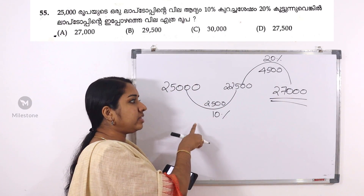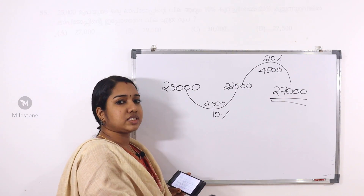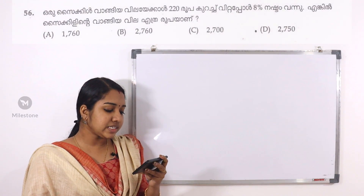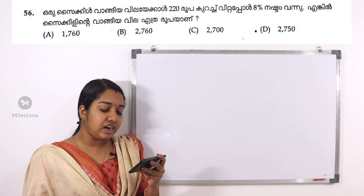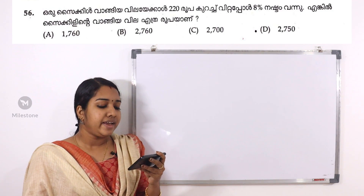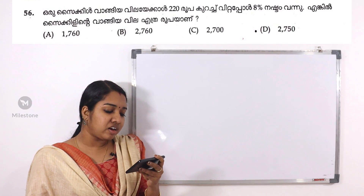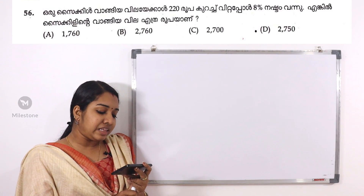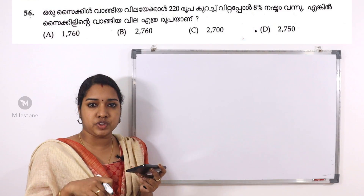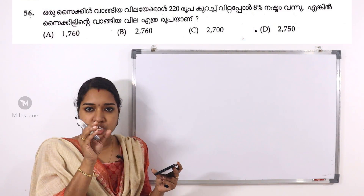Here we will discuss part 4 of this video. We will discuss a few questions. Let's look at one cycle. One cycle is divided by 220 degrees. It is divided by 80 degrees. The cycle is divided by 220 degrees.